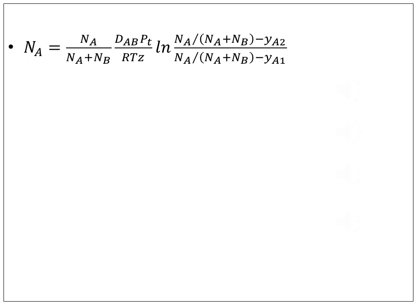In my previous video, I derived the formula for steady-state molecular diffusion in a binary fluid mixture with one non-diffusing component: NA = [NA/(NA+NB)] × [DAB·P·T/(R·T·Z)] × ln{[NA/(NA+NB) - yA2]/[NA/(NA+NB) - yA1]}.